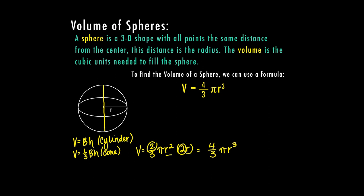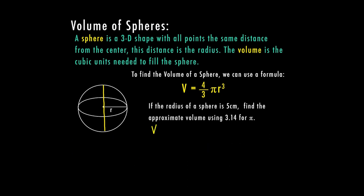So if the radius of a sphere is five centimeters, we want to find the approximate volume using 3.14 for pi. So let's go ahead and plug the numbers into our formula.